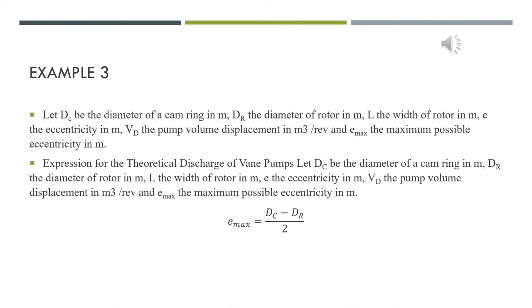Next, I am going to discuss how we find the eccentricity and the quality of the discharge by the pump. First of all, let Dc be the diameter of the cam ring, Dr equal the diameter of the rotor, L is the width of the rotor, E is the eccentricity, Vd is the pump volume displacement per revolution, and Emax is the maximum possible eccentricity. The maximum possible eccentricity equals the diameter of the cam ring minus the diameter of the rotor divided by 2.